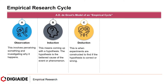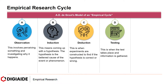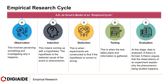Next, deduction — this is when experiments are constructed to find if the hypothesis is correct or wrong. Then comes testing — this is when the test takes place and the information is gathered. And finally, evaluation. At this stage, data is analyzed and a theory is formed. A theory argues that the observation of an experiment explains why the phenomenon being studied happens.